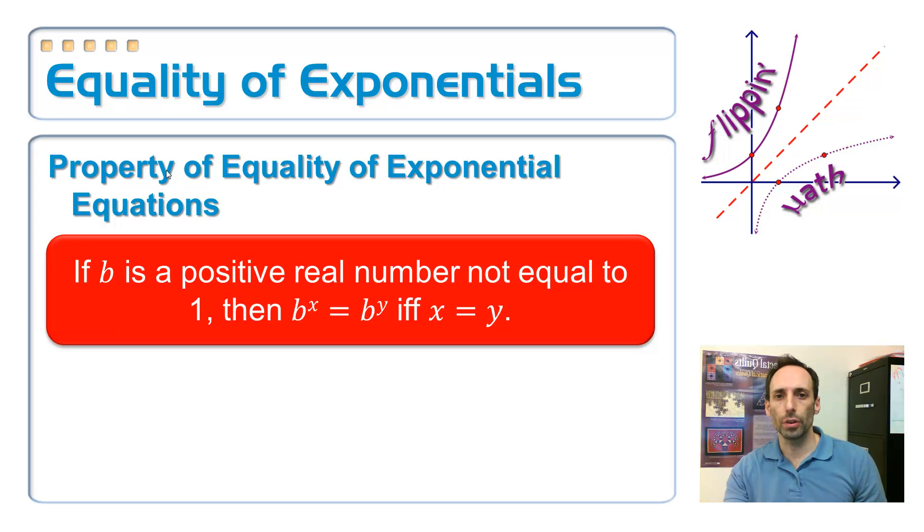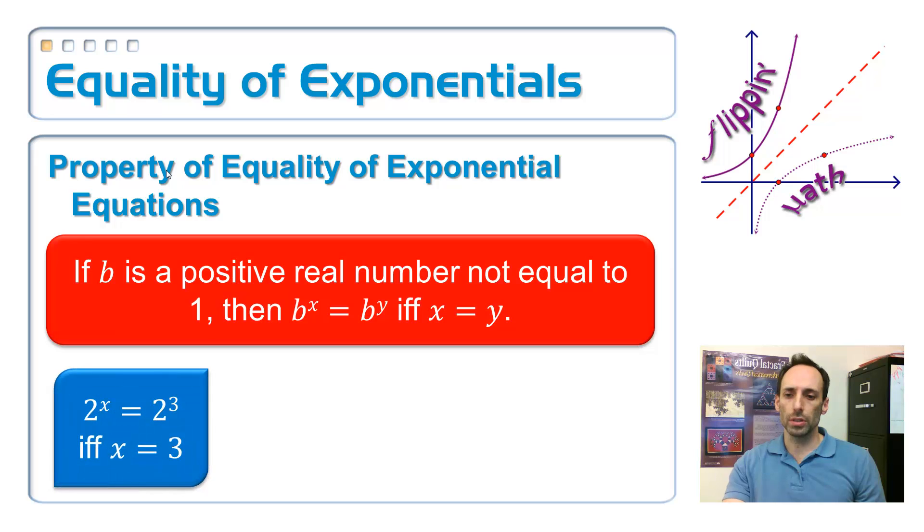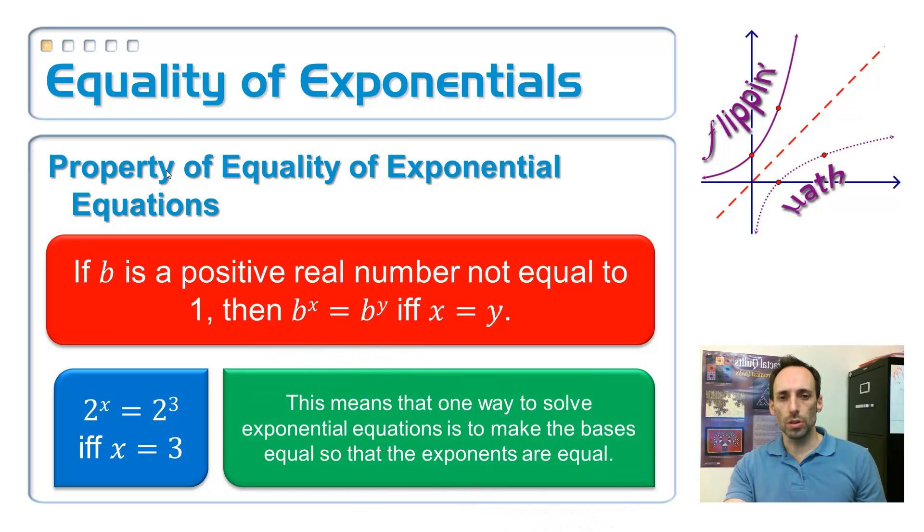All right, so from that other example what we just looked at, what that meant was 2 to the x was the same thing as 2 to the 3rd as long as x was equal to 3.